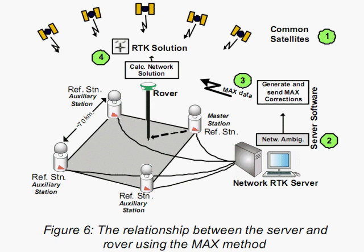MAX is altogether different, because the corrections are calculated on the rover instead of at the central processing facility. The system sends your rover correction data from each of the surrounding base stations, and your rover can then use all of that data to determine the best possible correction method based on satellite visibility and other factors. Because of this, the processing load on the receiver using MAX correction data is considerably higher. Older receivers that can't do MAX will have to continue using VRS or IMAX.